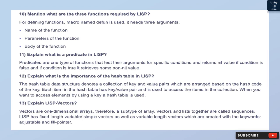Question 12: Explain the importance of the hash table in Lisp. The hash table data structure denotes a collection of key-value pairs arranged based on the hash code of the key. Each item in the hash table has a key/value pair and is used to access items in the collection. A hash table is used when you want to access elements by using a key.